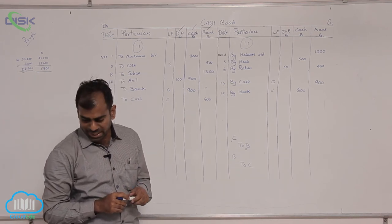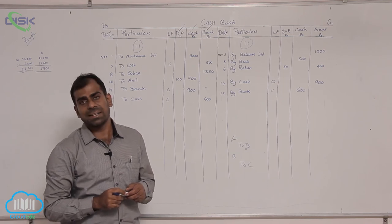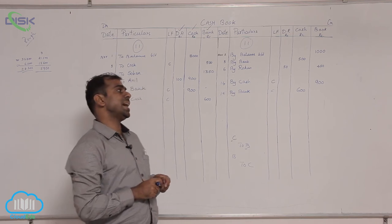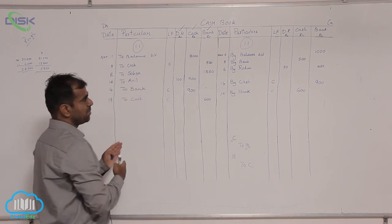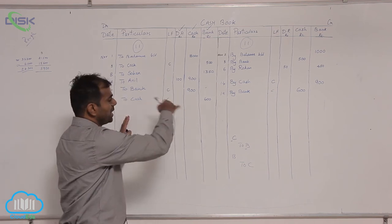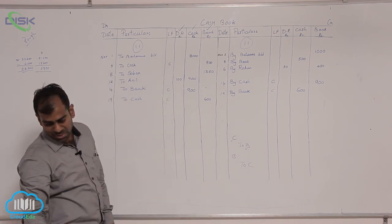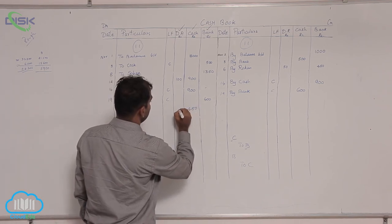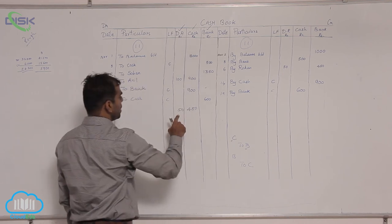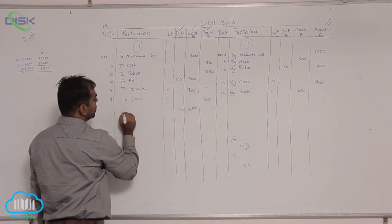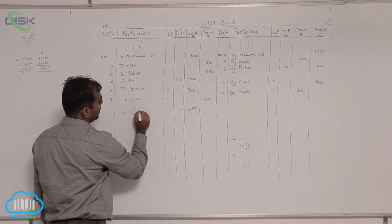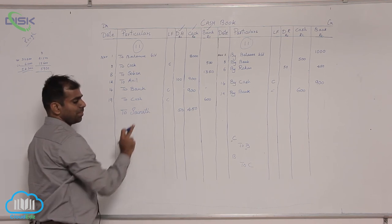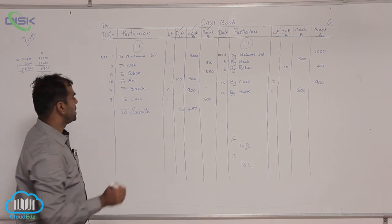On the 22nd, cash is received from Signath with discount allowed. Since it is a receipt of cash, record it in the cash column on the debit side — the amount being 450. The concession of 50 rupees is discount allowed, so record it in the discount allowed column. The reason in particulars is 'to Signath', and the date is 22nd.